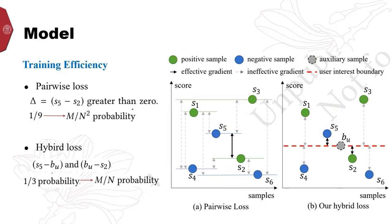The existing methods usually suffer from the gradient vanishing problem, where those selected samples are too easy to be classified correctly and are unable to produce an effective gradient to update models. Our hybrid loss can alleviate the gradient vanishing problem.